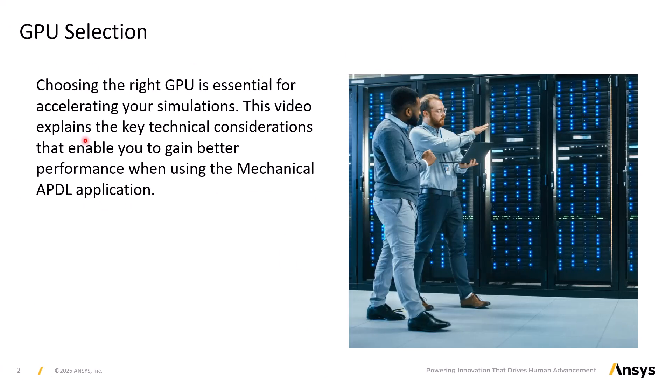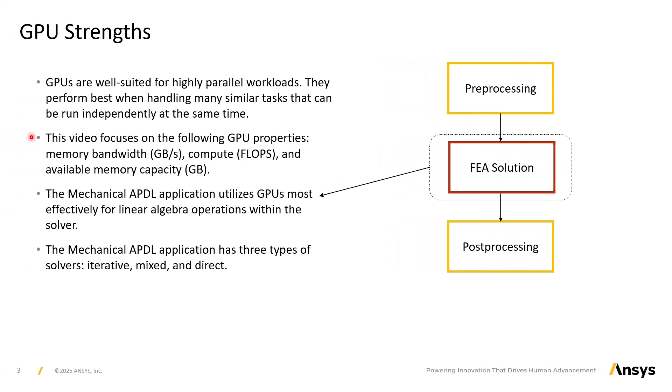Choosing the right GPU is essential for accelerating your simulations. This video will highlight key technical considerations and performance metrics to guide your GPU selection for simulations in the Mechanical APDL application. GPUs, or Graphic Processing Units, are cards designed for parallel processing, making them ideal for workloads that involve performing many similar tasks at the same time. Their strength lies in executing operations independently and simultaneously across thousands of cores.